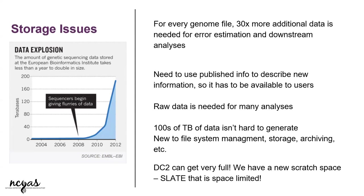The difference is that in DC2, anybody could save as much data as they wanted — there was no space restriction. One person could use a petabyte while someone else used only 100 MB. On Slate, it's the other way: you're space-limited. Every user gets access to a scratch space of only 1.6 terabytes. This makes users more mindful of how much space they're using. You can request more space, and all that information is available online.